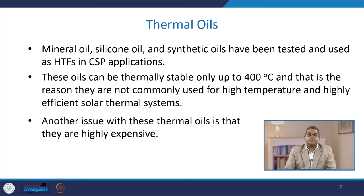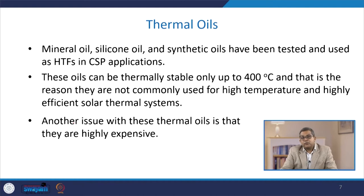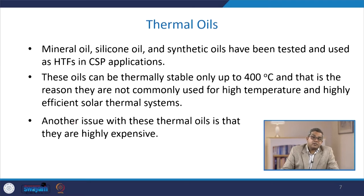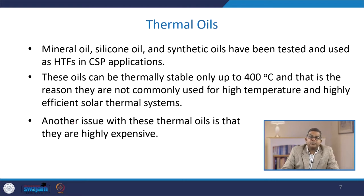These oils can be thermally stable only up to about 400°C, because beyond this they may have a tendency to dissociate and disintegrate, causing environmental problems as well as corrosion and safety issues. That is the reason they are commonly used for high temperature and highly efficient solar thermal systems. Another issue with these thermal oils is that they are very expensive—mineral oil, silicon oil, and synthetic oil all carry high processing costs.